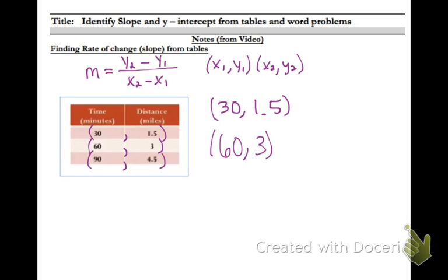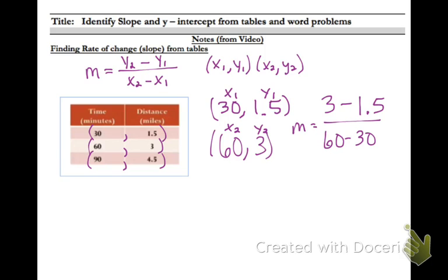Once we've pulled our two points out, go ahead and label them on the top if you get confused about what's what. We're going to take y2 on the top, so 3 minus y1, so 1.5. And then on the bottom, we're going to have x2, which is 60, minus x1, which is 30. If you do 3 minus 1.5, you get 1.5, and 60 minus 30 is just 30. So if we put that in our calculator and simplify, we find out that our slope is 1.5.